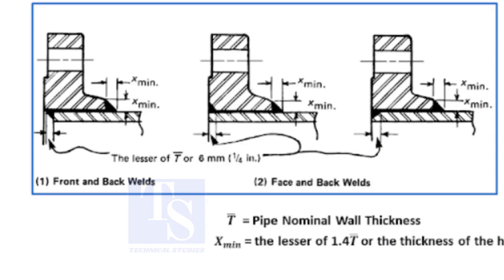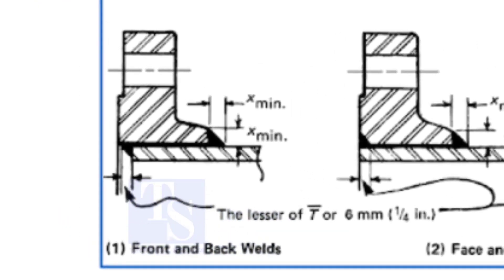As per the code, there are three different procedures for slip-on flange fit-up. In the first method, the flange is overlapping the pipe. The overlap shall be the thickness of the pipe or a minimum 6 mm.